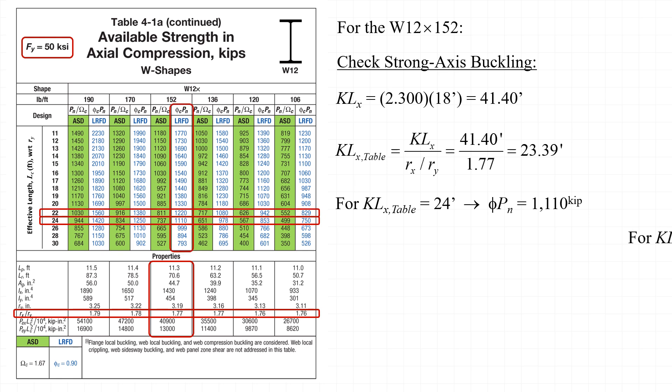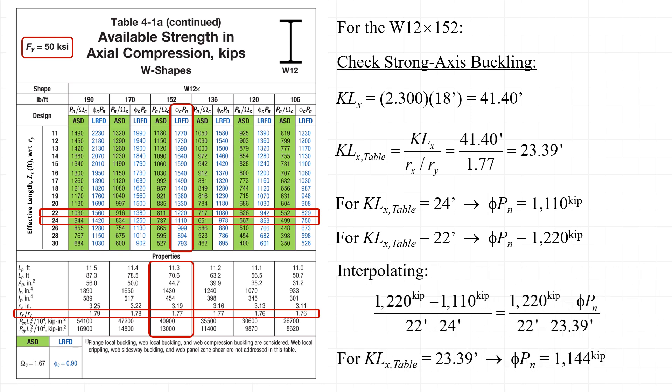We are permitted to interpolate between rows in the table. For kl = 22 feet, φP_n = 1220 kips, and for kl = 24 feet, φP_n = 1110 kips. Interpolating between these two values for an effective length of 23.39 feet, we find an available strength φP_n of 1144 kips, which agrees well with our previous calculations.